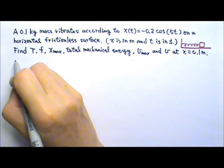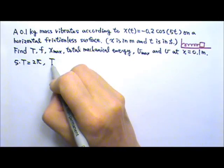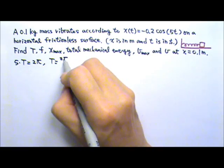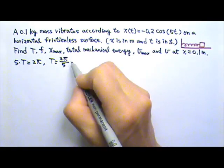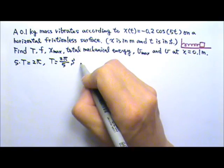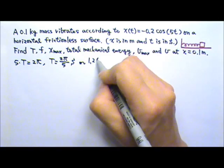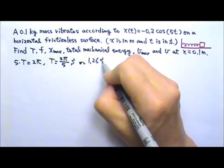So 5 times the period equals 2 pi. That means the period equals 2 pi divided by 5, this many seconds. You can just leave your answer in this form, or you can do the calculation and find this is 1.26 seconds.